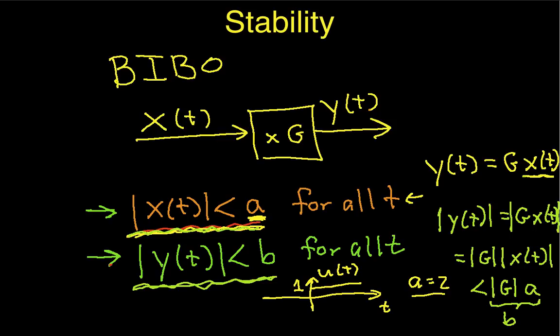It is possible to have an unbounded signal. For example, u of t is a bounded signal. But if I had e to the at, as t gets large, this thing gets large too. So e to the at does not satisfy this inequality.